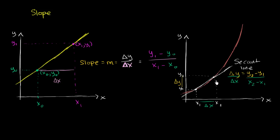As a little bit of foreshadowing: how will we eventually get the tools to figure out the instantaneous rate of change, not just the average? Well, imagine what happens if this second point got closer and closer to the first point. Then the secant line would better and better approximate the instantaneous rate of change right at that point — or you could think of it as the slope of the tangent line.